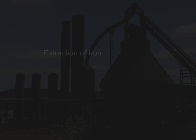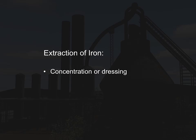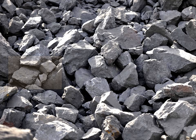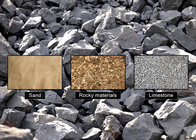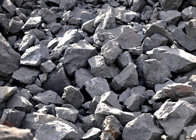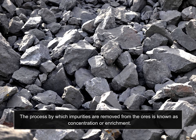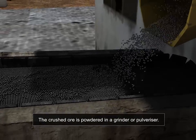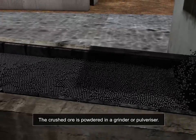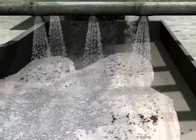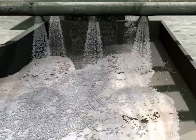Before the ore can go into the furnace, it has to undergo certain preliminary treatment, like concentration or dressing, and roasting or calcination. Iron ore mined from the Earth's crust contains impurities such as sand, rocky materials, and limestone. These impurities are collectively known as gangue. The gangue must be removed before the metal can be extracted. The process by which impurities are removed from the ores is known as concentration or enrichment. The ore is first crushed into small pieces in a crusher, then powdered in a grinder or pulverizer. The powdered ore is washed in a current of water; the heavier ore particles settle down while the lighter impurities are washed away.